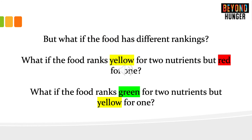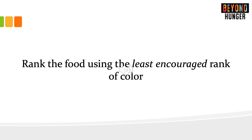What if the food has two different rankings? What if the food ranks yellow for two nutrients but red for one? Or green for two nutrients but yellow for one? When this happens, we rank the food using the least encouraged rank of color. Let's take a look at some examples.